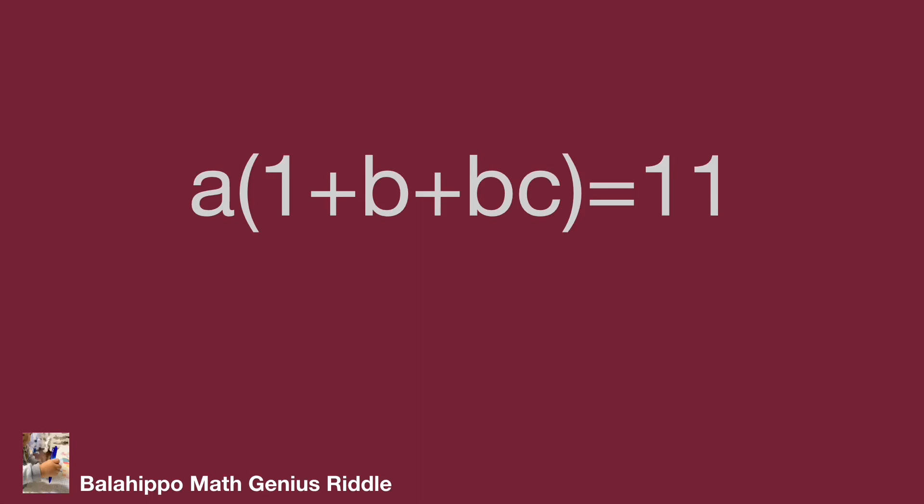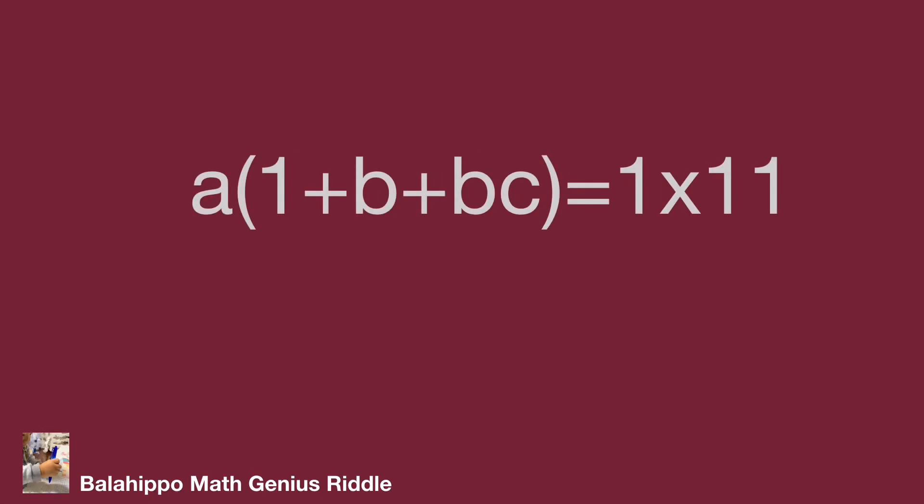And we know abc are positive integers. Therefore, the two quantities a and 1 plus b plus bc would equal two numbers multiplied as 1 times 11 or 11 times 1. So we can assume a equals 11 or a equals 1.